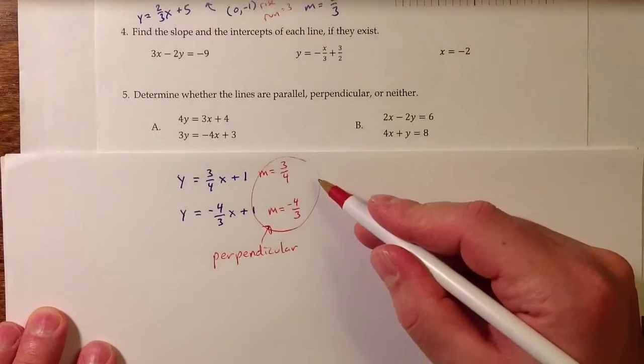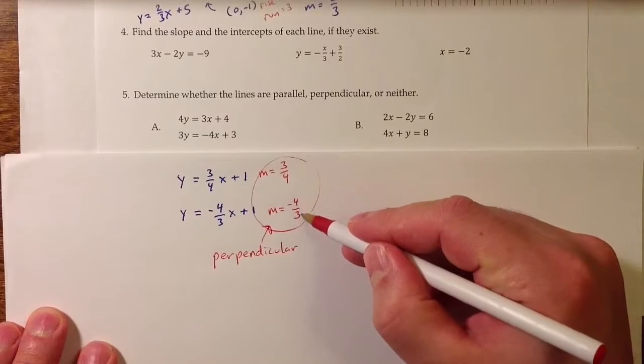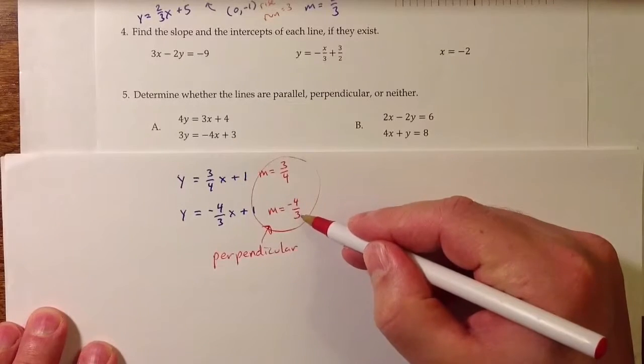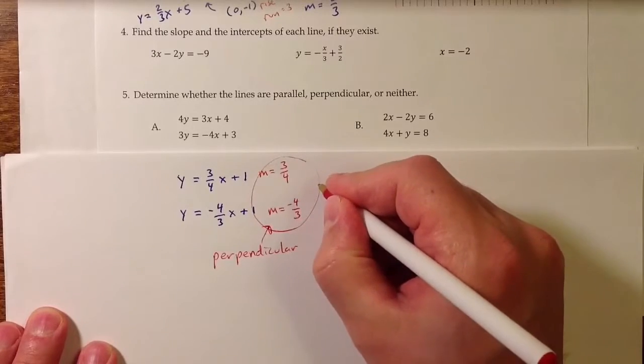The characteristic that we're seeing here is that we have 3 over 4. The reciprocal of that is 4 over 3. And one of them is positive, the other is negative. So these are called opposite reciprocals.